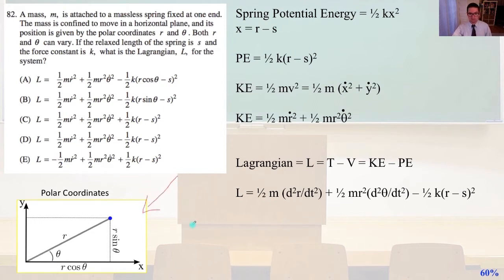Here they are: the kinetic energy in polar coordinates equals 1/2 m r-dot squared plus 1/2 m r squared theta-dot squared. Our Lagrangian L equals T minus V equals our kinetic energy minus our potential energy. And that is answer D.